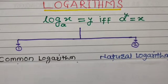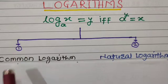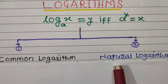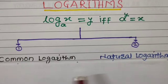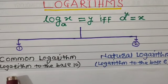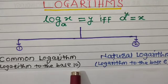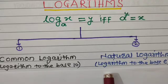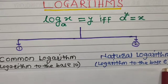Now, types of logarithm. There are two types: number one, common logarithm, and number two, natural logarithm. Common logarithm is nothing but logarithm to the base 10, and natural logarithm is nothing but logarithm to the base e.